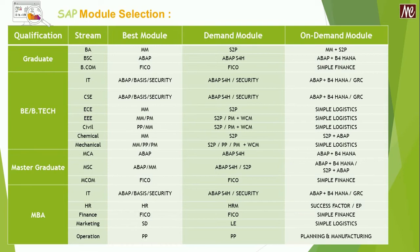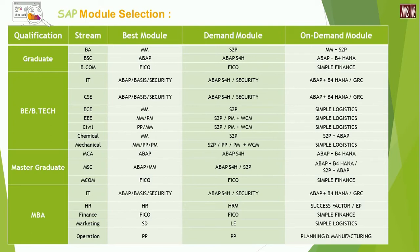If you are a plain graduate carrying the stream of BA, then the best module would be Material Management, called MM, and in the leg of demand module, it would be H2P — also considered as Sourcing and Procurement. In the leg of on-demand module, the profile should have good knowledge in Material Management module plus Sourcing and Procurement too.